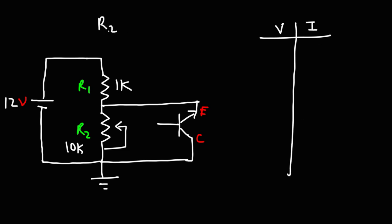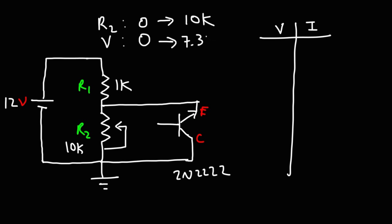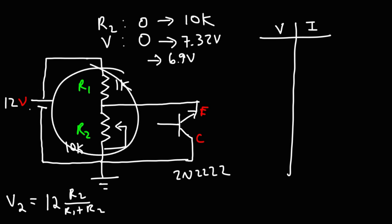As I progressively increased R2 from 0 to 10k, the voltage across R2 — or across the emitter-collector region of the 2N2222 transistor — progressively increased from 0 to 7.32 volts, but that was its maximum. As I continued to increase R2, the voltage began to decrease from 7.32 to about 6.9. Keep in mind that the voltage across R2, which we'll call V2, equals the battery voltage of 12 volts times R2 divided by the sum of R1 and R2, forming a voltage divider network with R2 controlling the voltage across the emitter-collector region.